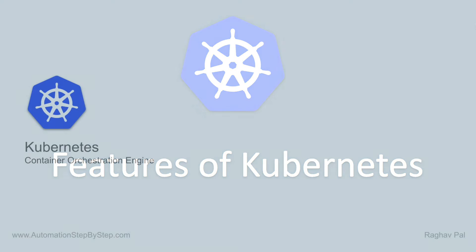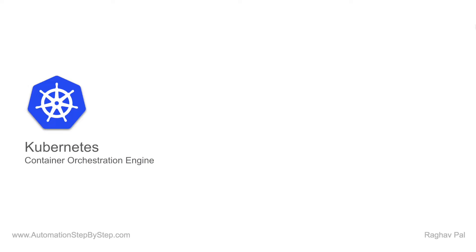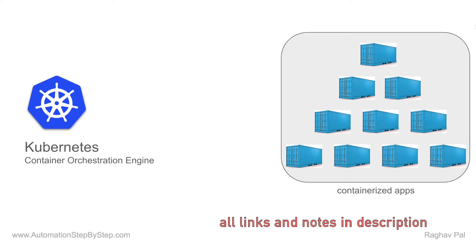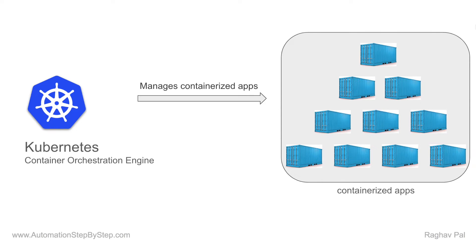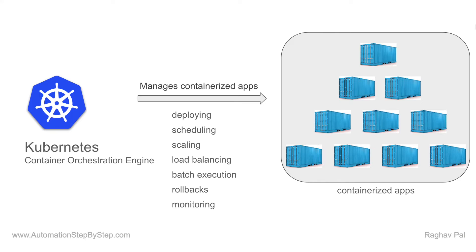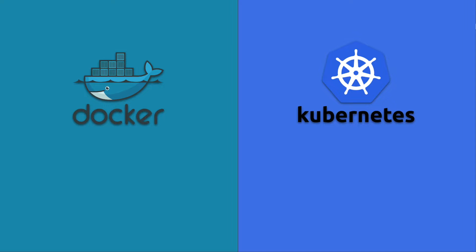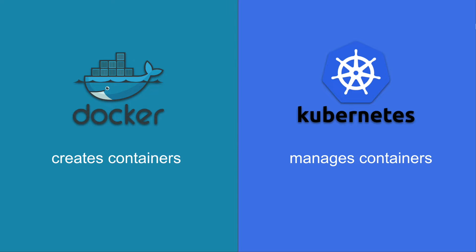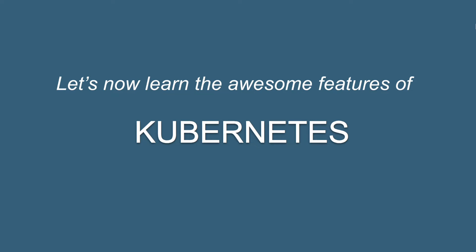Hello and welcome to this session. I hope you have watched the earlier session and we now have a basic understanding of what Kubernetes is. Kubernetes is a container orchestration engine that manages containerized apps and takes care of deploying, scheduling, scaling, load balancing, etc. A container tool like Docker will create the containers, whereas Kubernetes will manage the containers.